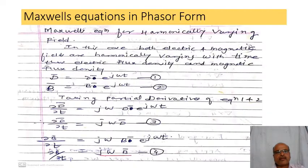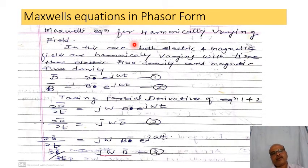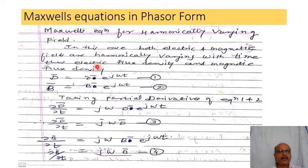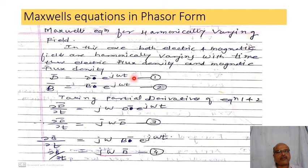We will start the derivation. We have already studied Maxwell's equations in time-varying fields. Maxwell's equations in phasor form are also known as Maxwell's equations for harmonically varying fields. In this case, both electric and magnetic fields are harmonically varying with time. Thus, electric flux density and magnetic flux density are given by: D-bar equals D-bar times e raised to j-omega-t, and B-bar equals B-bar times e raised to j-omega-t — equations one and two.